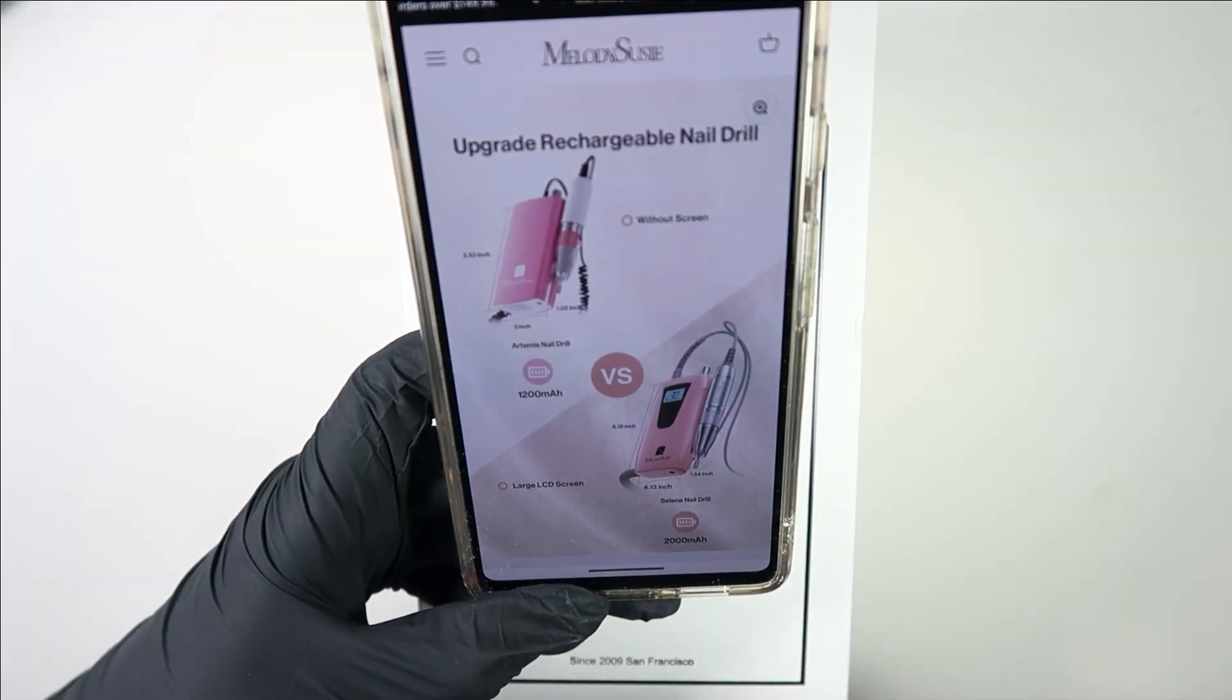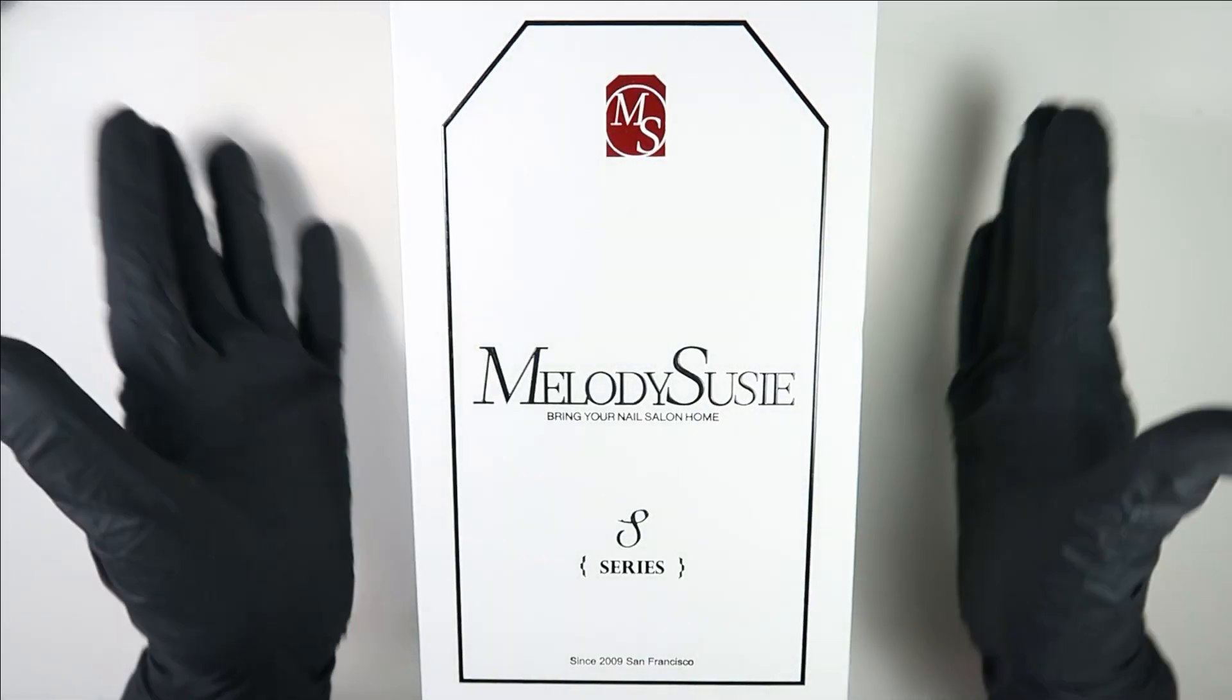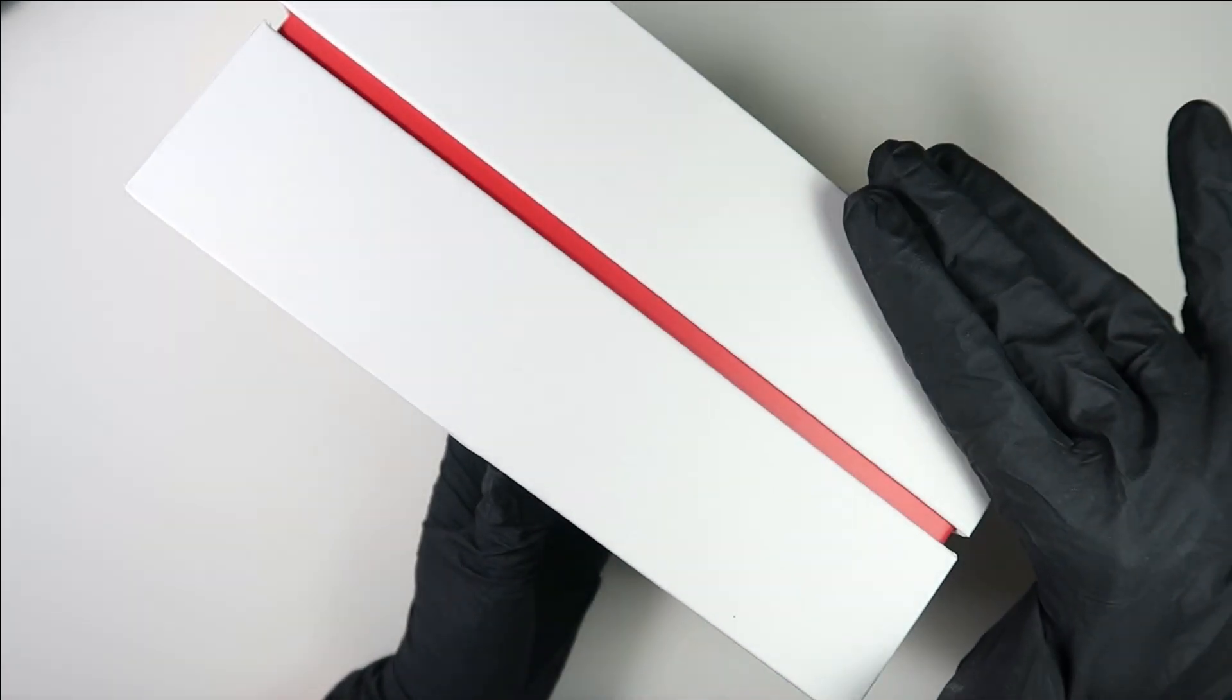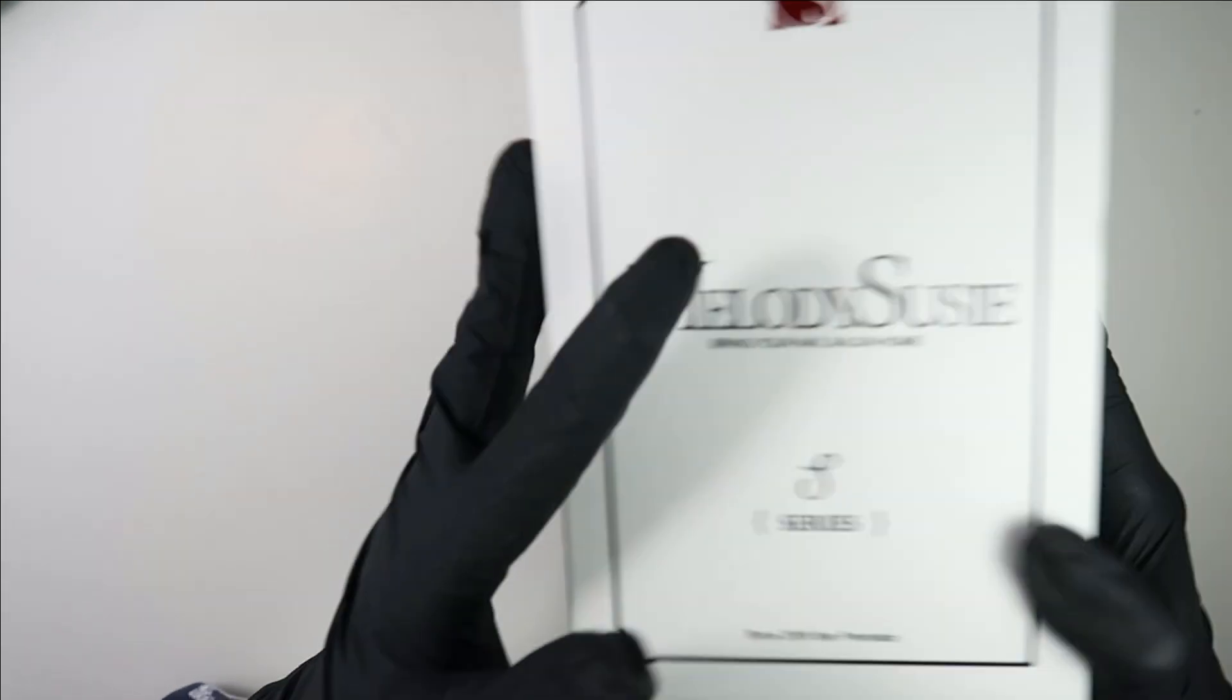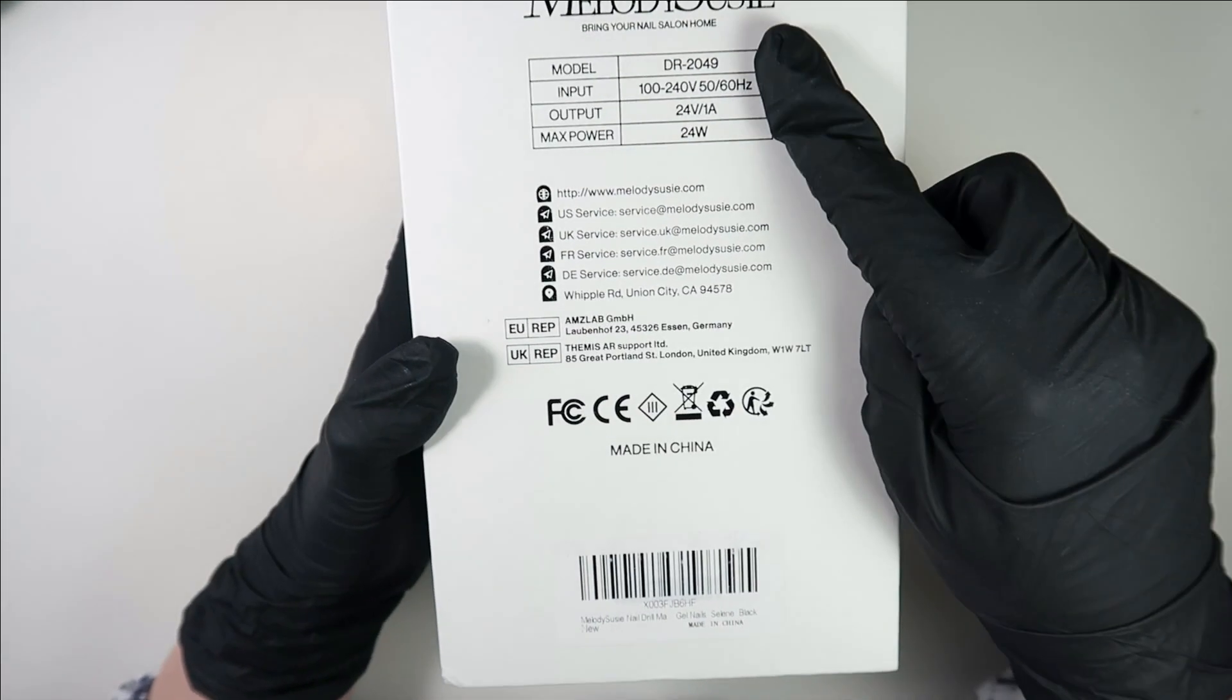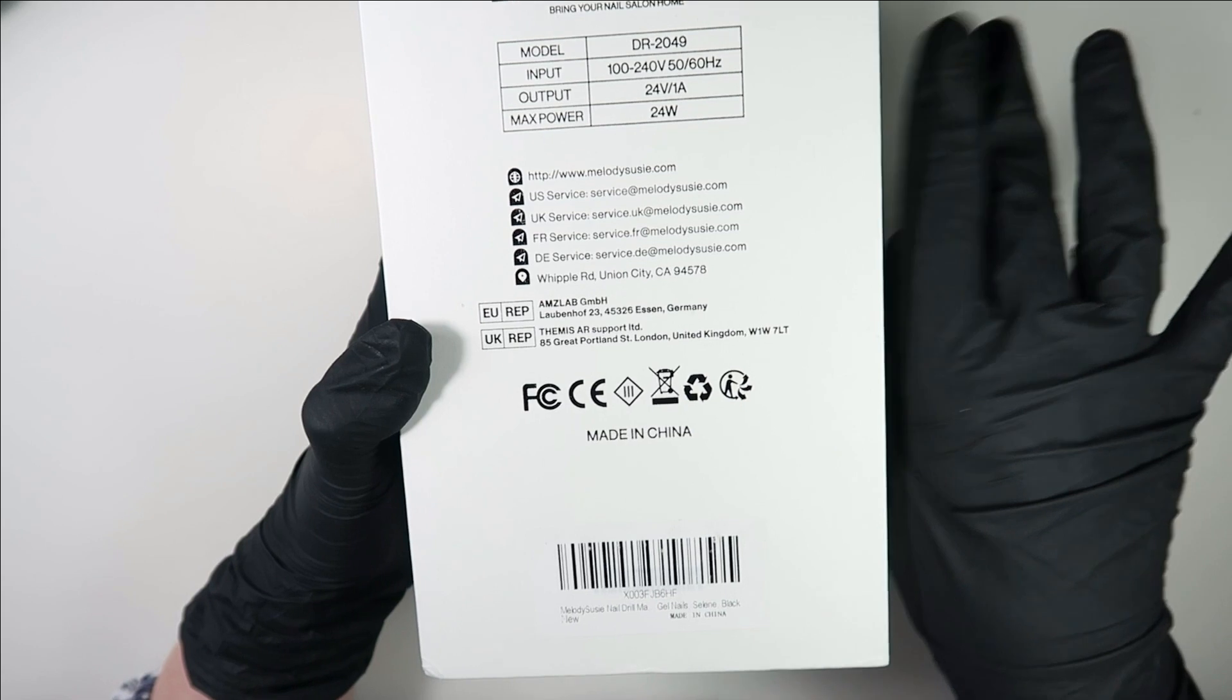Now let's do the unboxing of this beautiful nail drill machine. This is the big box which it came with. Look at that guys, it's really big and so beautiful—white and red. This is the really cute logo MS, and even here they have MS. At the back they have the model number, the input, output, max power, and all their social media links here.